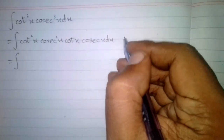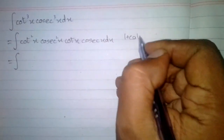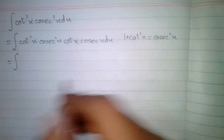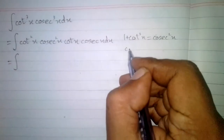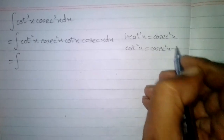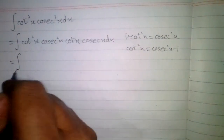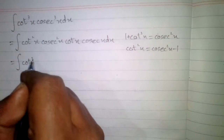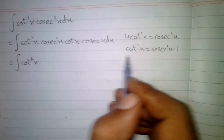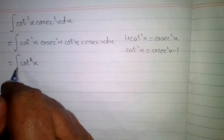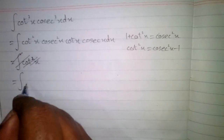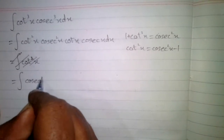Now here we will use the formula 1 plus cot square x is equal to cosec square x, and this can be written as cot square x is equal to cosec square x minus 1. So in place of cot square x we can write cosec square x minus 1.